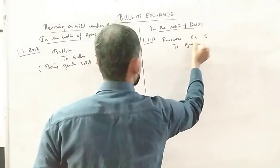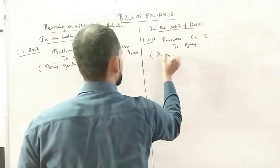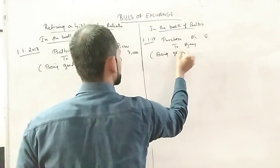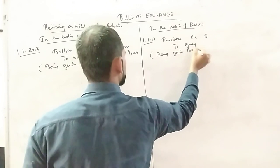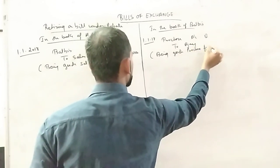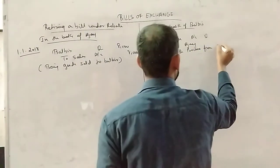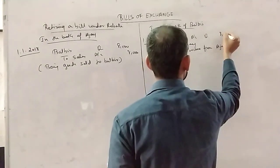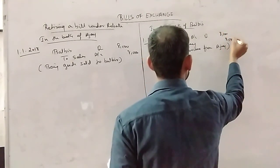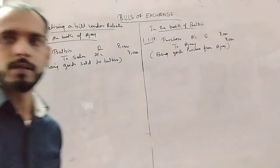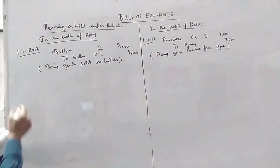To purchase. Goods sold to Balbir, 8,000 and 8,000.